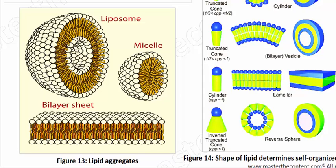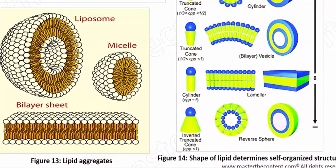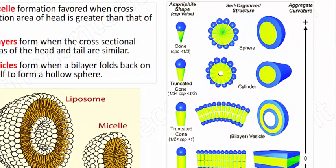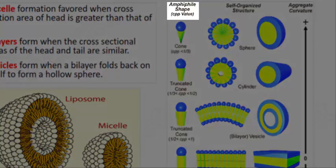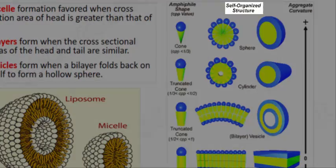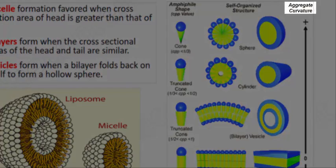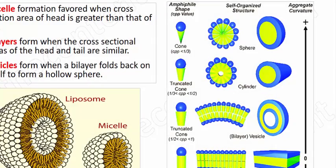This structure will therefore be commonly seen in fatty acids and lysophospholipids, which have this sort of structure. I'm going to direct your attention to figure 14, to the top of that figure where we have three headings: amphipathic shape, self-organized structure, and aggregate curvature. What this diagram shows us is what structure is likely to be formed based on the shape of the amphipath, based on the shape of the lipid, the phospholipid or the main lipid that is forming the structure.